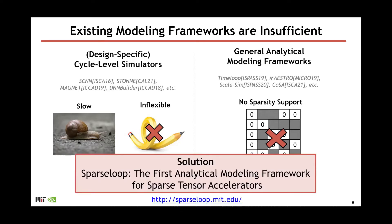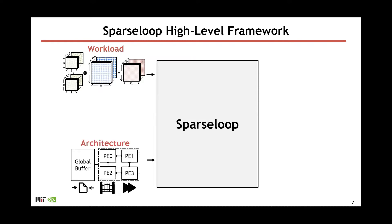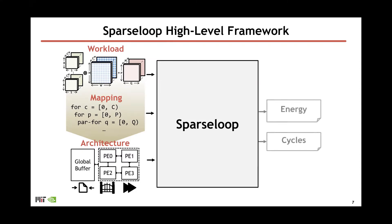To solve the problem, we propose SparseSoup, the first analytical modeling framework for sparse tensor accelerators. SparseSoup takes three inputs: the workload specification — for example, a convolutional layer in a deep neural network — the architecture, which describes the sparse tensor accelerator design, and the mapping, which defines how the workload is programmed onto the architecture, including data transfers between storage levels and parallel compute. By analyzing these three inputs, SparseSoup generates energy consumption and cycle counts.